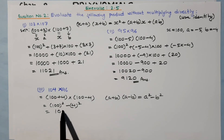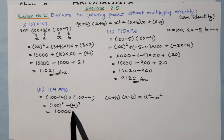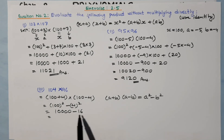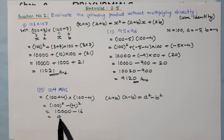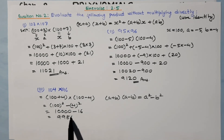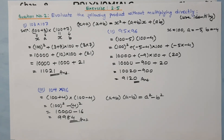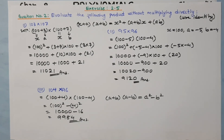So this becomes 100² − 4² = 10,000 − 16 = 9,984. That is our final answer for question number three.